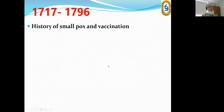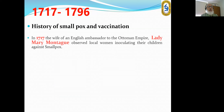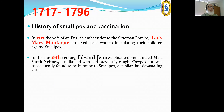During the period 1717 to 1796, covering the history of smallpox and vaccination: Lady Mary Montagu, not a scientist but a keen observer, observed women in Turkey inoculating their children against smallpox. In the 18th century, Edward Jenner observed and studied Sarah Nelmes, a milkmaid who had previously caught cowpox and was subsequently found to be immune to smallpox, a similar but less devastating virus.